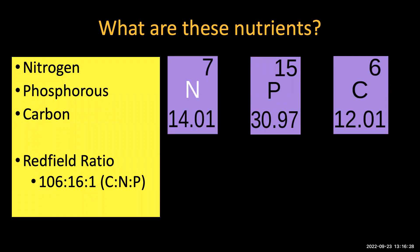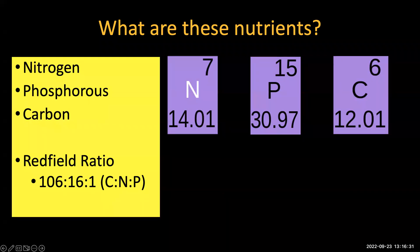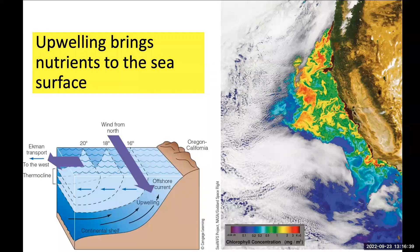When these algae and zooplankton die, the carbon, nitrogen, and phosphorus in their tissue is recycled back into the water column. The nitrogen and phosphorus are then stored in deeper and darker layers of the ocean, and they become available when these deeper layers of water move upwards in the process that we call upwelling.